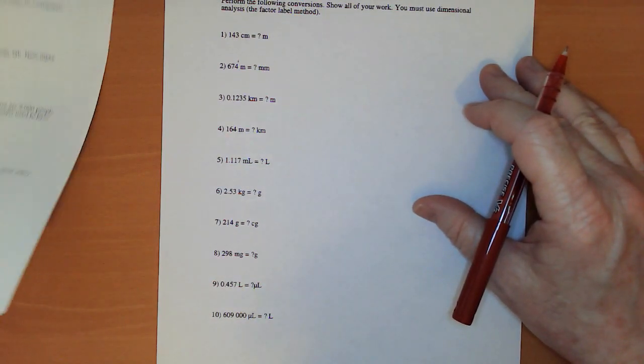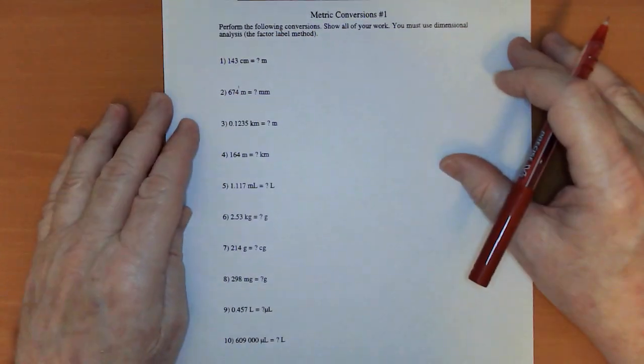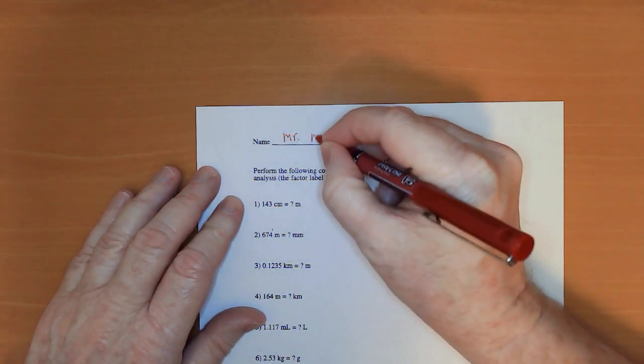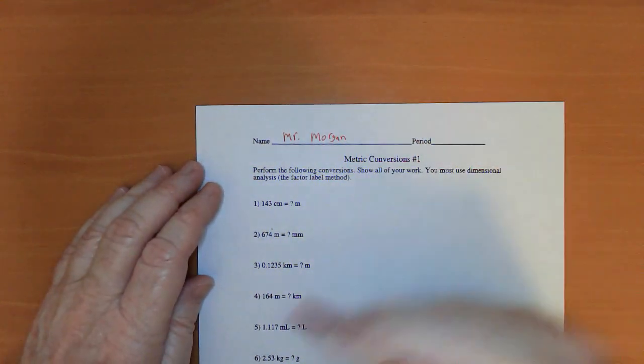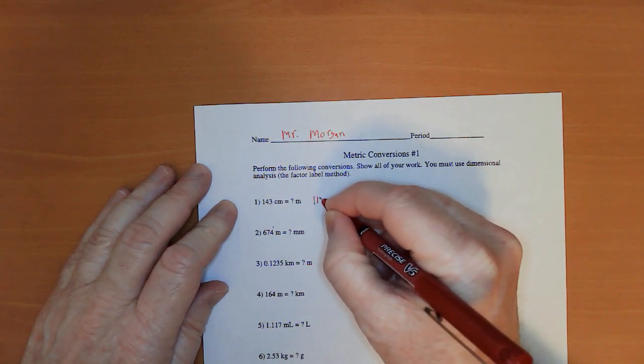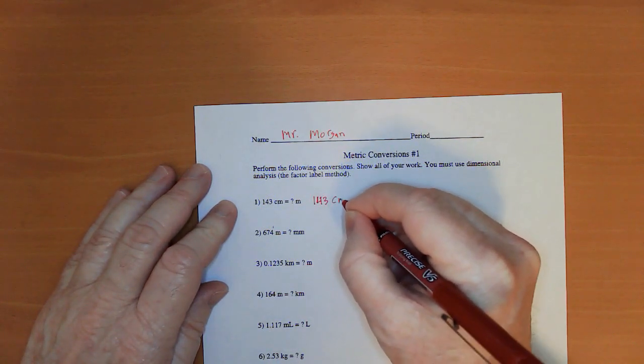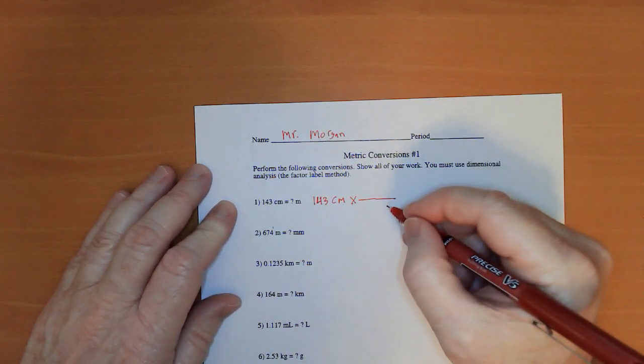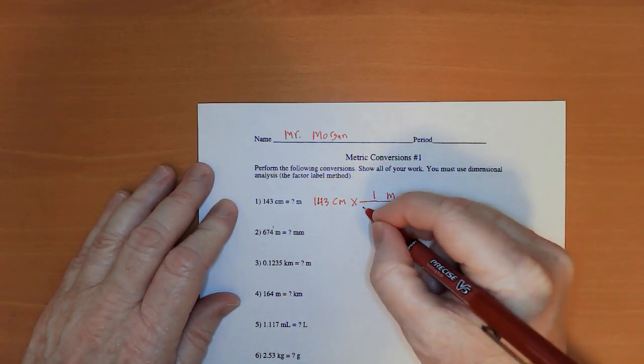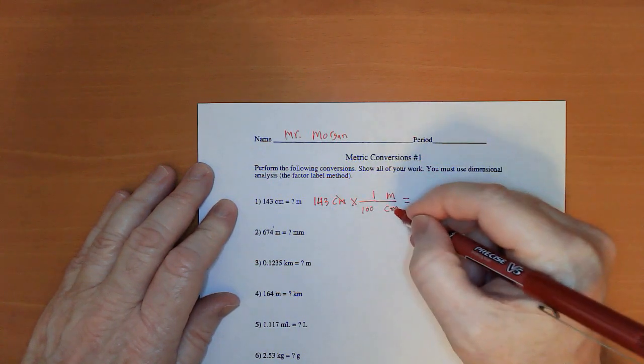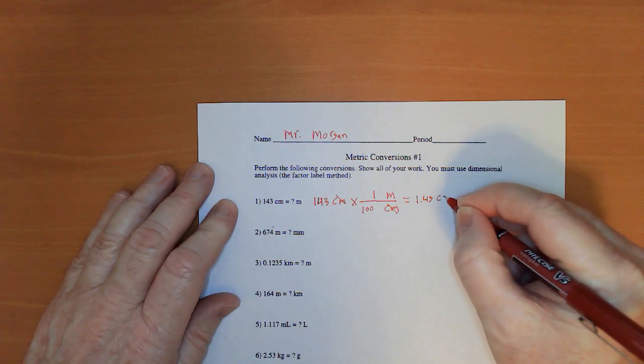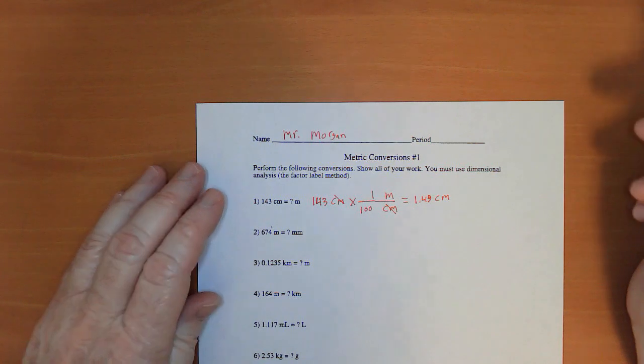So if you have worked through these problems, or at least tried some of them, one of the things that you probably realized was that on the first page, all of these questions were one-step conversions. They only involved one conversion factor. So we start off with 143 centimeters. And we're converting that to meters. So centi goes on the bottom because we want it to cancel. Meter goes on the top. One centimeter has 100 centimeters. Centimeters cancels. 143 divided by 100 is 1.43 meters.